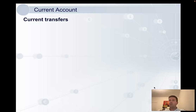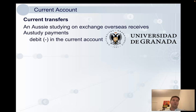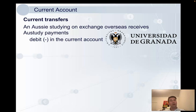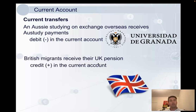Sometimes money given to people by governments crosses borders. Transfer payments are when the government just gives money — they don't buy a good or service. For example, my brother-in-law, an Australian who went to study in Granada, Spain, received government study payments. When that money left Australia and went to his bank account in Spain, it was a debit in the current account. Transfer payments also come into Australia — for example, older British people living here receive a pension from the UK government, which is a credit in our current account.